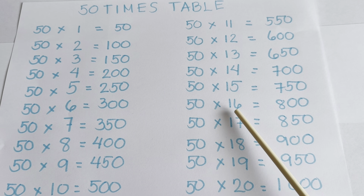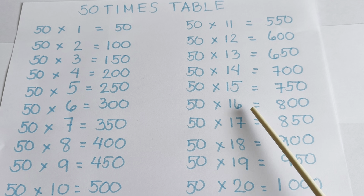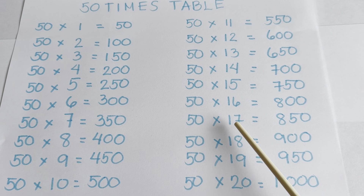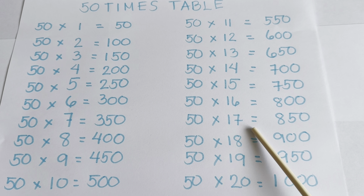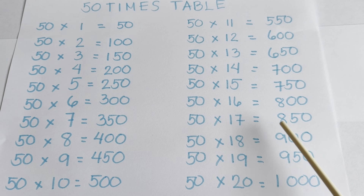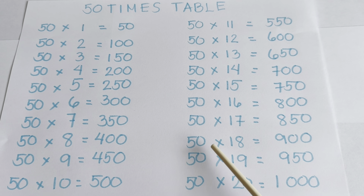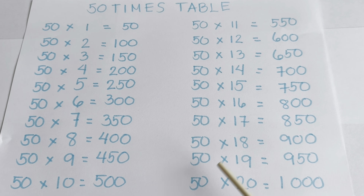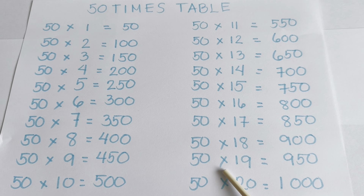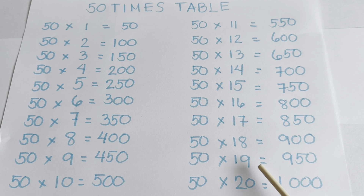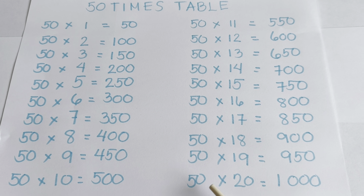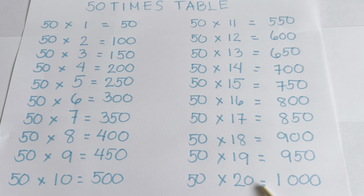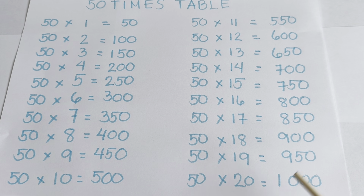50 times 16 is equal to 800. 50 times 17 is equal to 850. 50 times 18 is equal to 900. 50 times 19 is equal to 950. And lastly, 50 times 20 is equal to 1000.